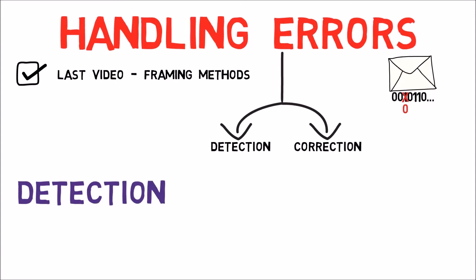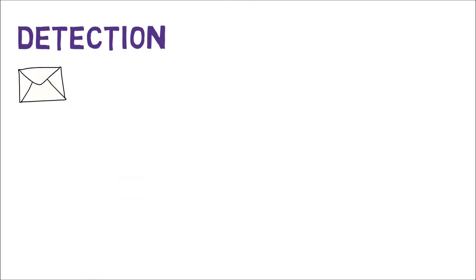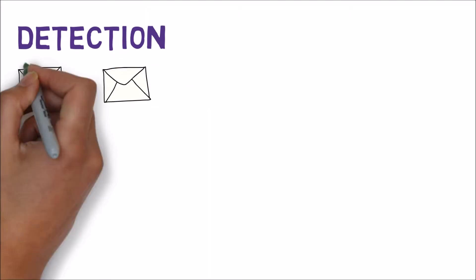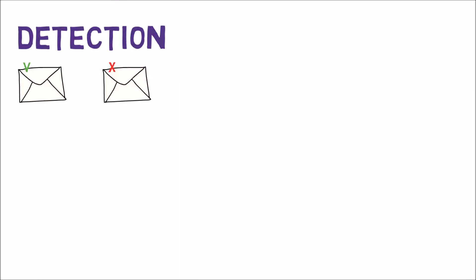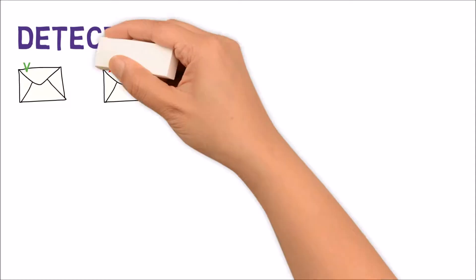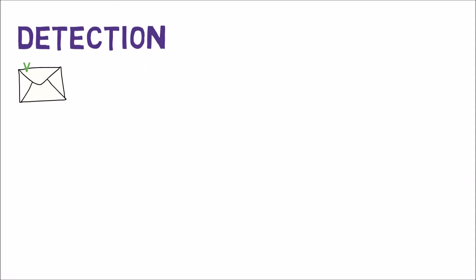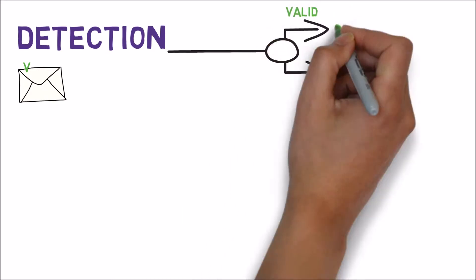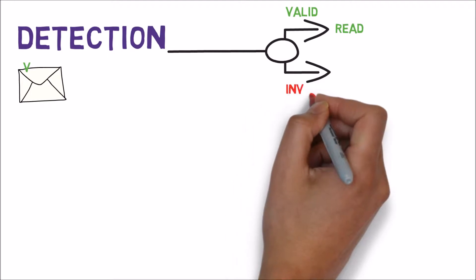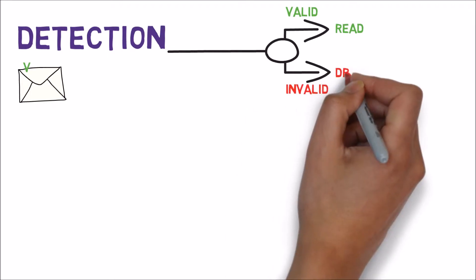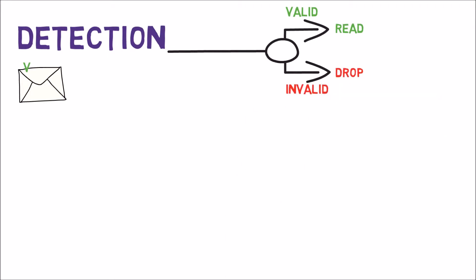We shall start by describing detection and then talk about correction. When dealing with error detection, we are looking for a boolean result: true or false. Is the frame valid or not? That is all. We don't want to know where the error occurred. If the frame is invalid, we will simply drop it. So when the receiver receives a frame, she'll determine whether an error has occurred. If the frame is valid, she will read it. If the frame contains errors, the receiver should drop it.